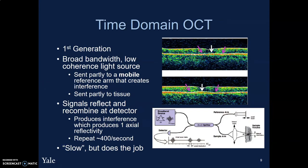The first generation of OCT was time domain OCT. This used a broad-bandwidth, low-coherence light source sent over to a mobile reference arm that created interference. The name comes into play in that the OCT is based off interferences generated via time as the reference arm moves through. The signals reflect and recombine back at the detector, which uses the interference patterns to generate axial scans. Because it's time-dependent, it's relatively slow, doing about 400 scans per second, but it does reliably generate accurate pictures.